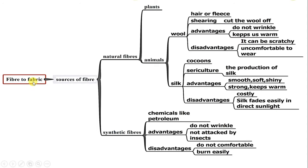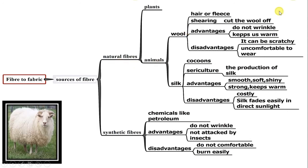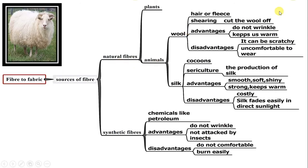Fiber to Fabric — sources of fiber include natural fibers and synthetic fibers. Under natural fibers, let us learn about animal fibers: wool. We get wool from the hair or fleece of sheep, goats, and rabbits.